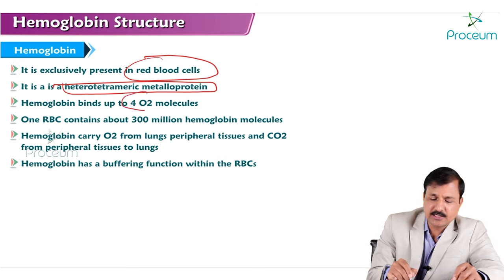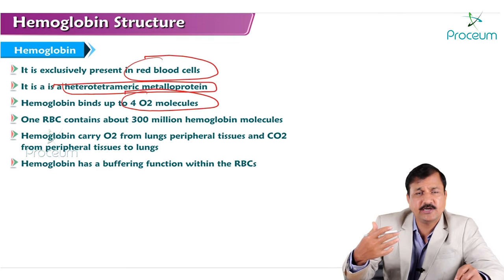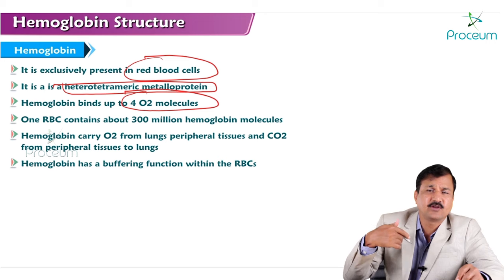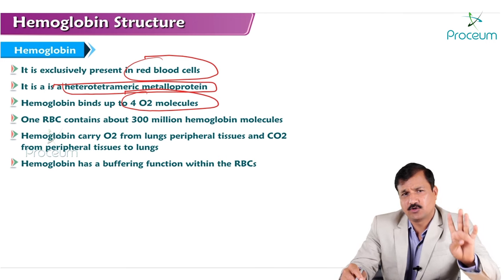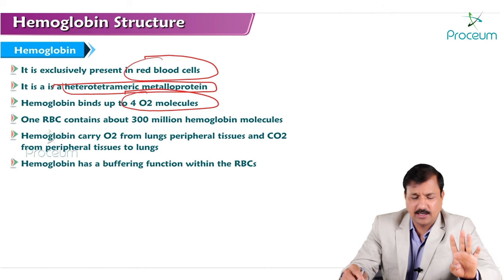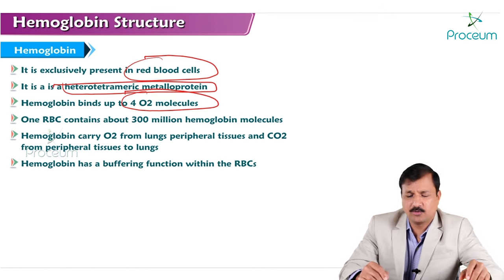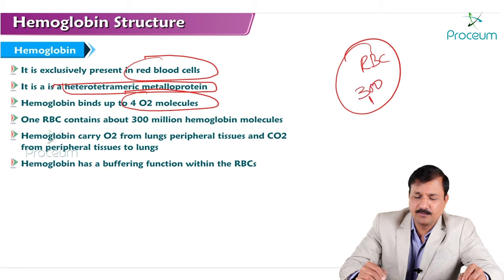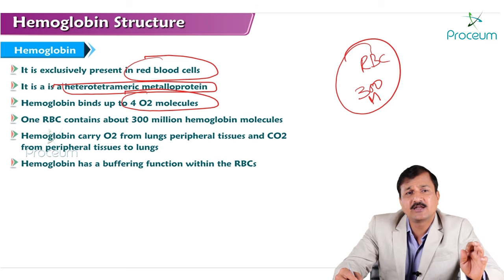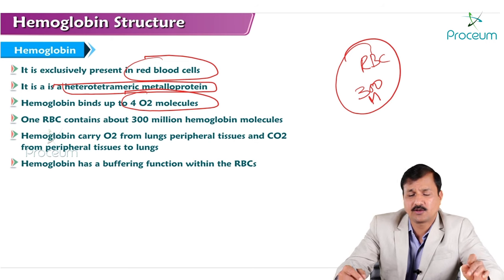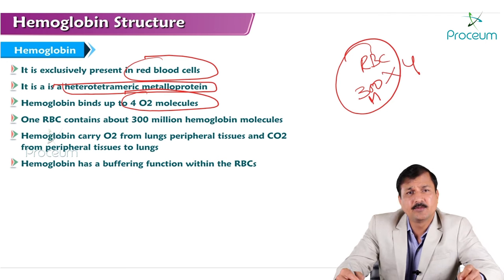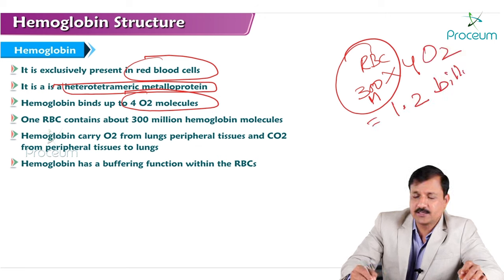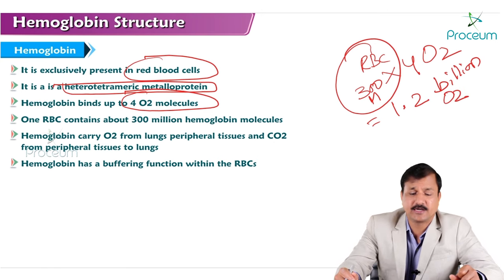Hemoglobin binds up to four molecules of oxygen because it has four subunits. Each subunit has one heme group, each heme group has one ferrous iron, and each ferrous iron will bind with one molecule of oxygen — so four subunits means four molecules of oxygen can bind. According to some estimates, there are around 300 million hemoglobin molecules in a red blood cell, and each can bind four molecules of oxygen, giving 1.2 billion oxygen molecules bound to hemoglobin per red blood cell.